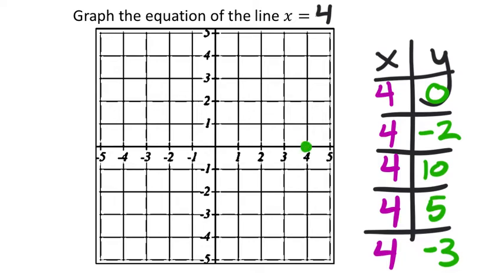So 4, 0, for example, that's our x-intercept. 4, negative 2 here. 4, 10 won't fit, but 4, 5 will right there. And then 4, negative 3, yeah, that'll fit as well.